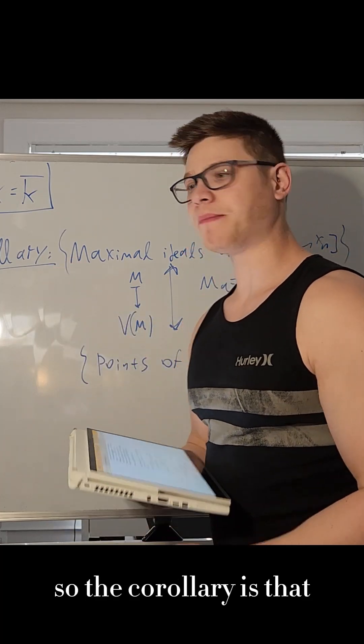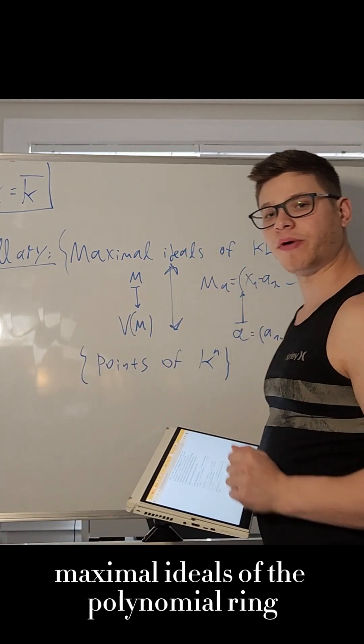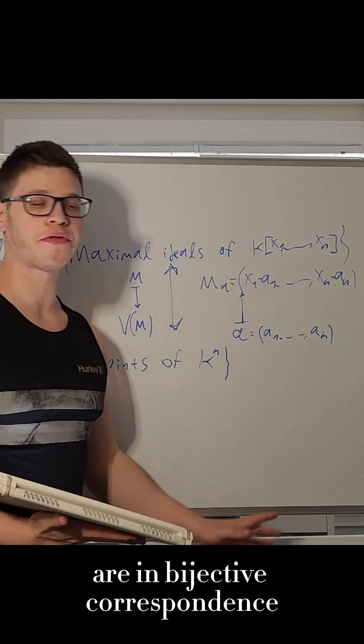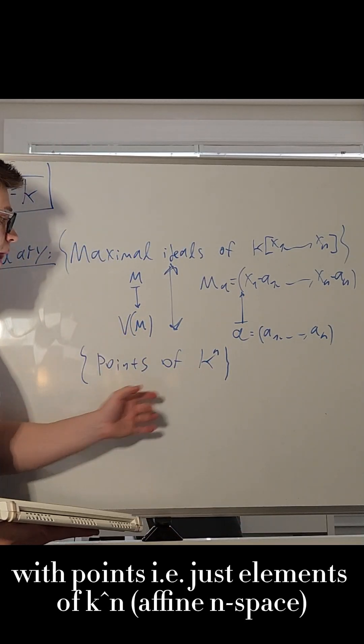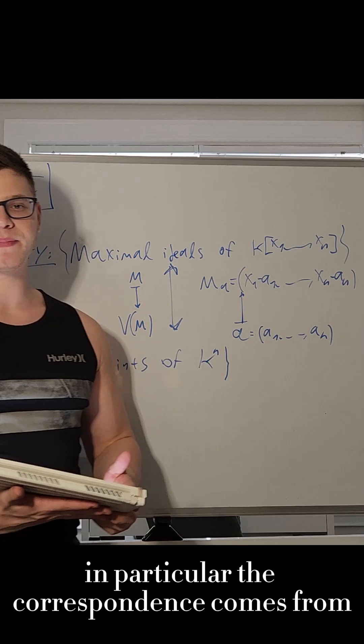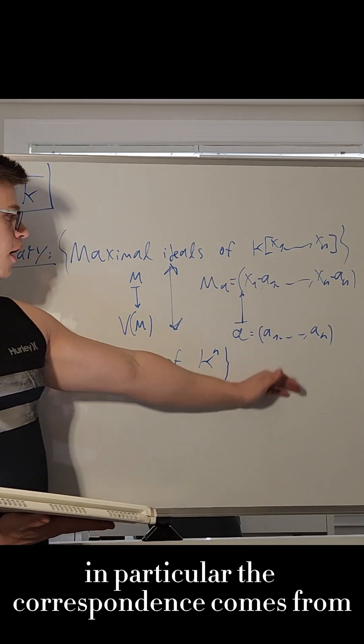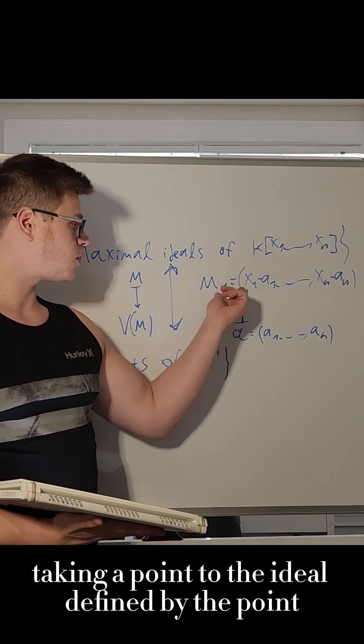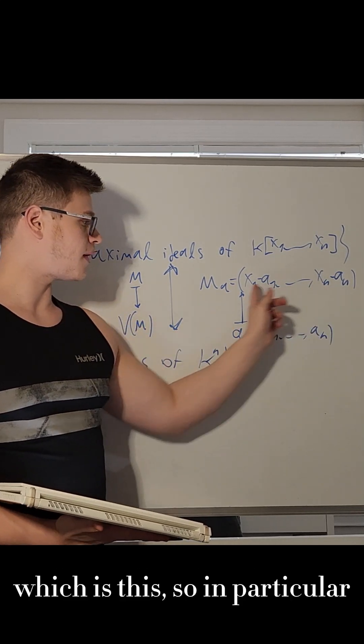So the corollary is that maximal ideals of the polynomial ring are in bijective correspondence with points, i.e. just elements of affine n-space. In particular, the correspondence comes from taking a point to the ideal defined by the point, which is this.